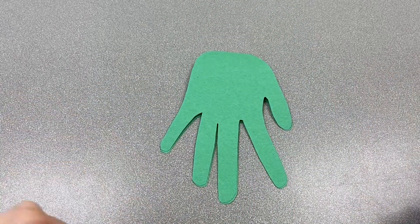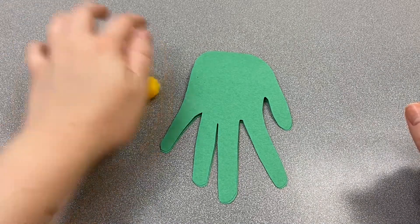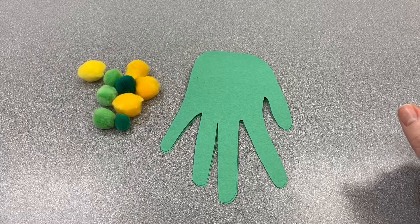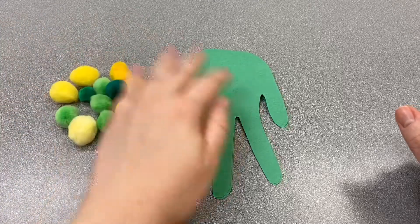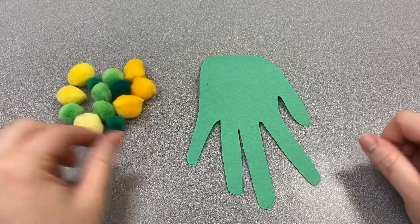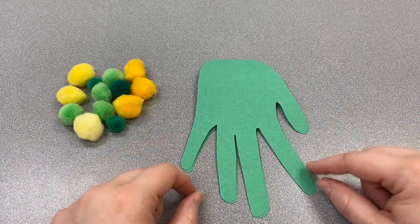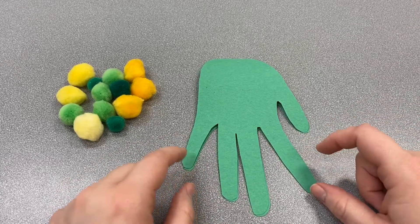Now that we have it all cut out, we're going to start gluing down our pom-pom balls on the palm of our hand. You can use any colors you want at any sizes just as long as it fills up the palm. You could even use rainbow colors so your turtle could have a rainbow shell.